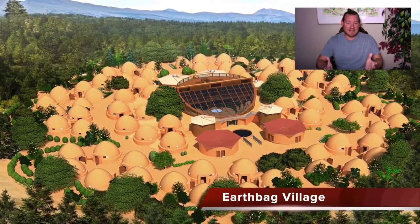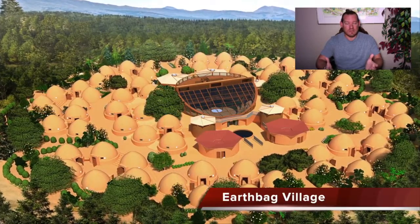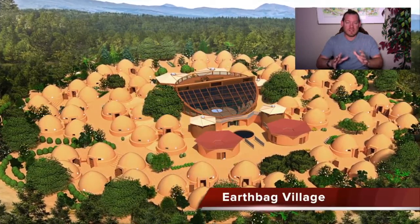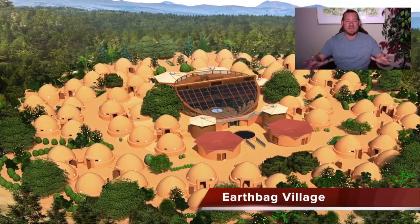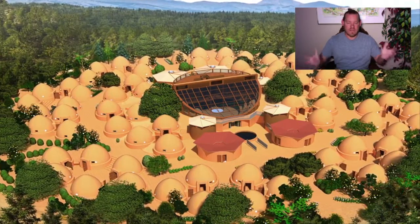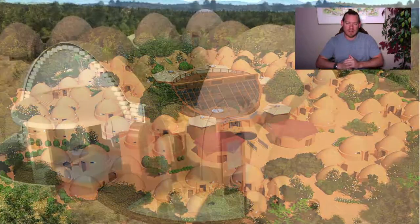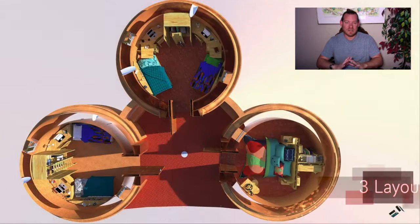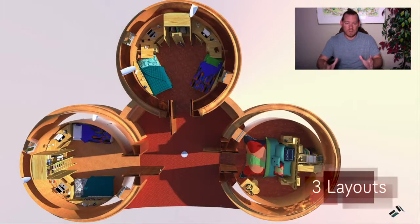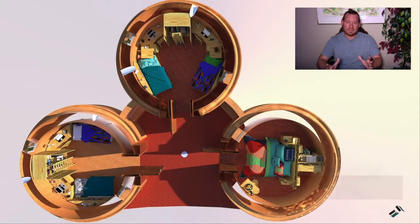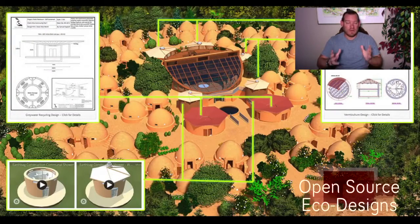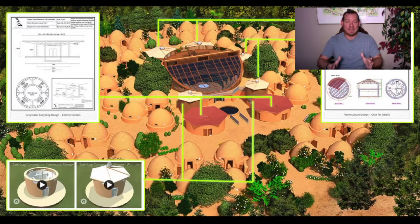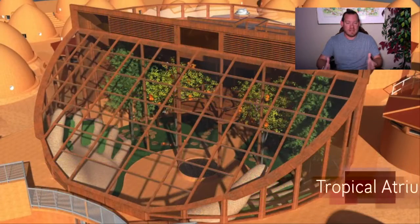One Community is dedicated to maximizing sustainability evolution through open source creation of everything you see in the background of this video. Our goal is to open source and free share the tools, tutorials, resources, and do-it-yourself instructions necessary for replication of everything you see — so that people can take what we're creating and modify it, adapt it, or replicate it exactly as it is to get the same results we're designing it for.